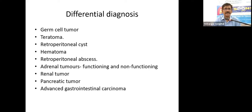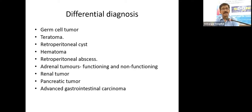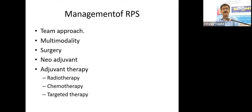Differential diagnoses for retroperitoneal masses include germ cell tumors (secondary from testicular malignancy or undescended testis), teratoma, retroperitoneal cyst, hematoma, retroperitoneal abscess, or tumors arising from defined organs such as adrenal tumors, kidney tumors, colon tumors, and pancreatic tumors. These need to be differentiated from true retroperitoneal sarcomas.